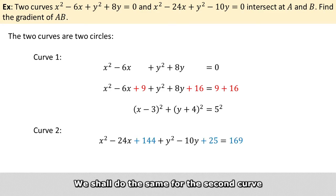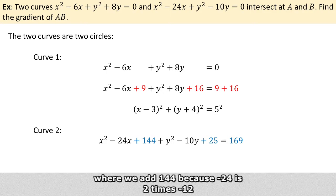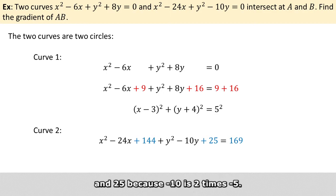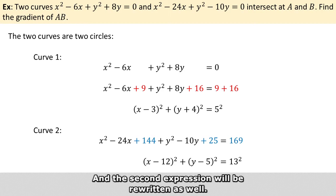We shall do the same for the second curve, where we add 144 because -24 is 2 times -12, and 25 because -10 is 2 times -5. And the second expression will be rewritten as well.